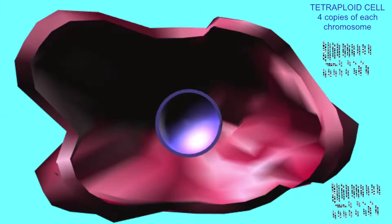So, for example, this hepatocyte is tetraploid. It has four copies of each chromosome.